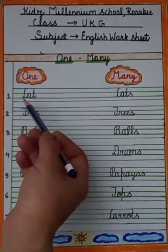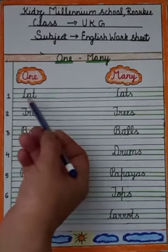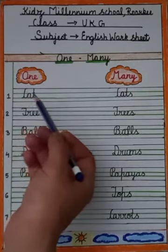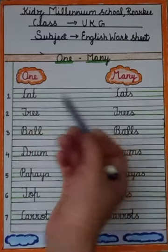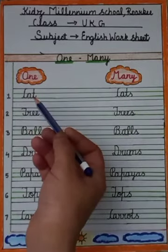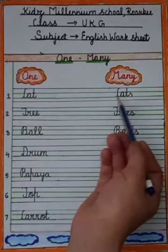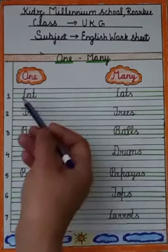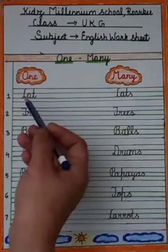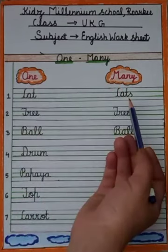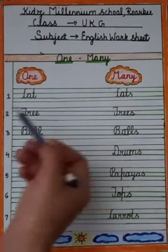Our first word is c-a-t, cat. And many of cat is c-a-t-s, cats. A cat — ek se zyada cats.